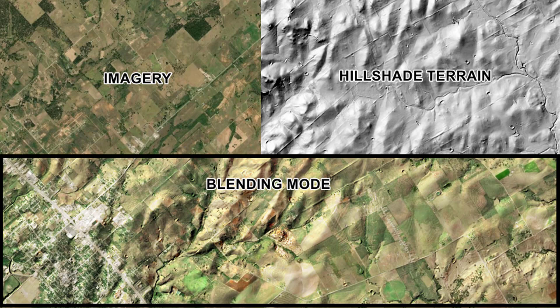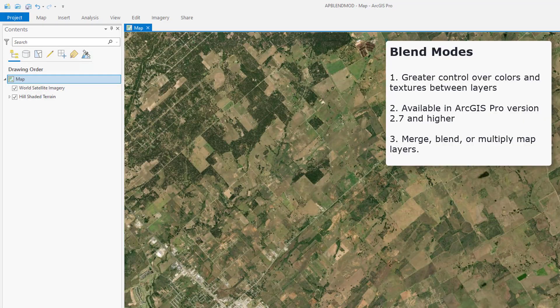Usually when you work with layers in a map, you may want to change how the layer draws to emphasize features or improve its visualization. Most of us have used layer transparency as a commonly used visual effect, but it affects the entire layer equally and tends to wash out details into a dull average. Blend modes in ArcGIS Pro can be considered as a mature version of transparency, as it allows far greater control over what shows through and how colors and textures between layers appear. This option is available in version 2.7 and higher.